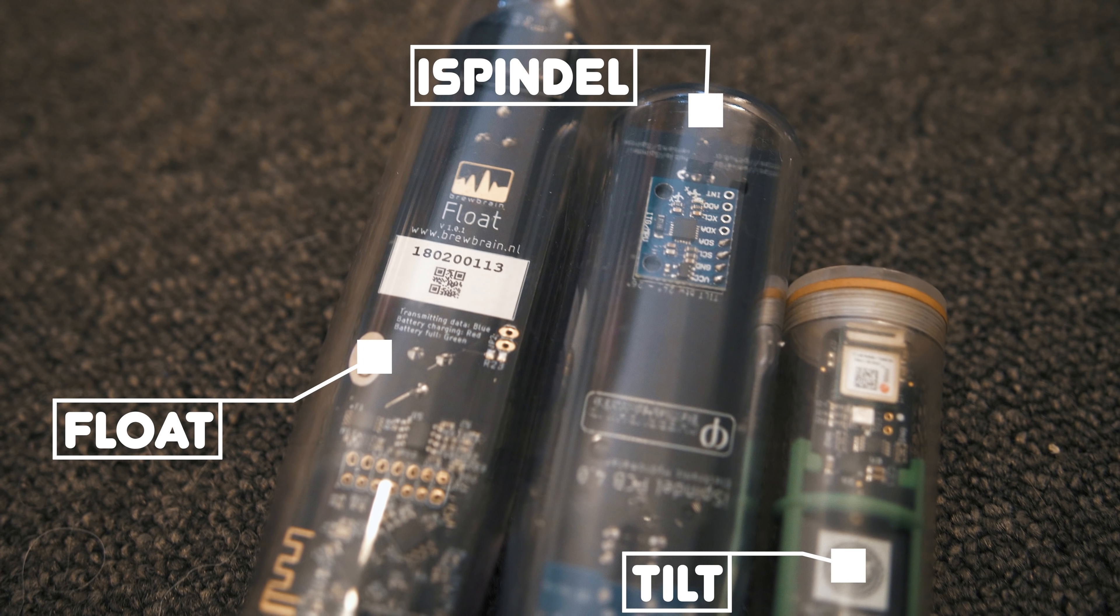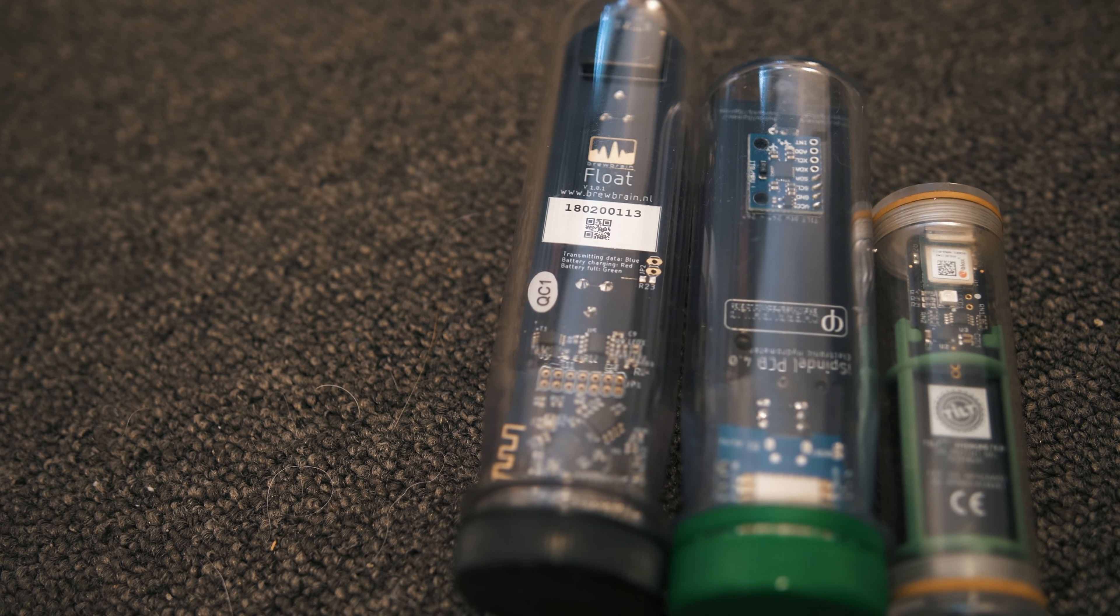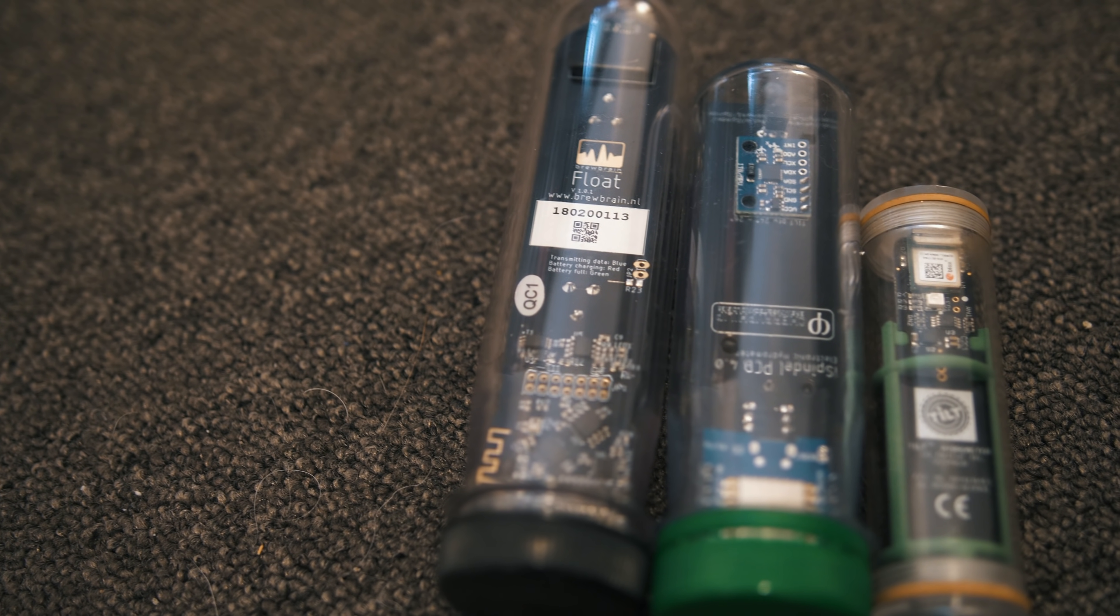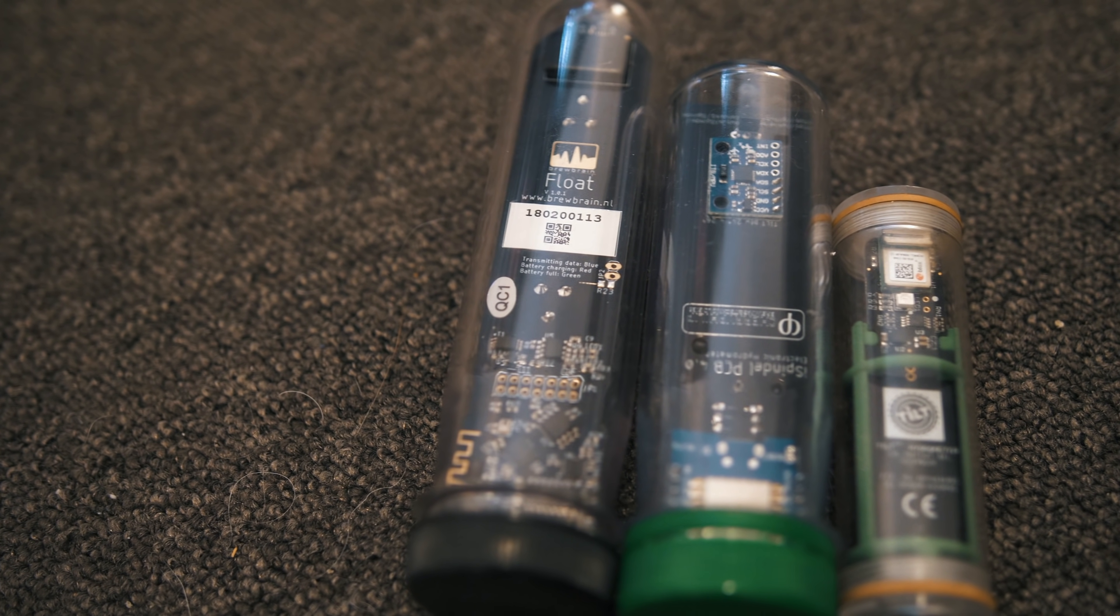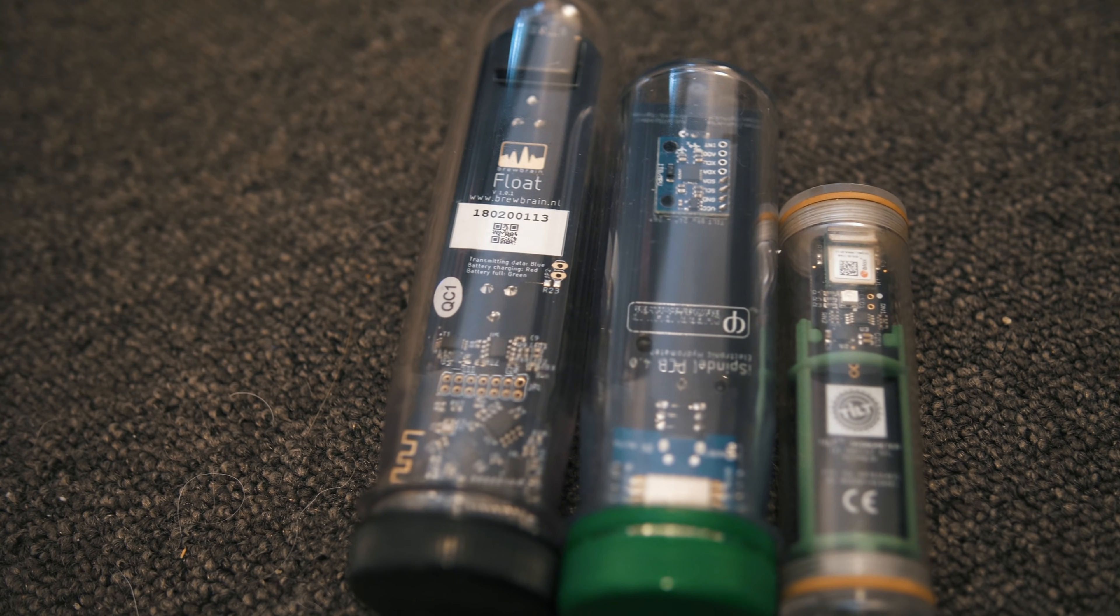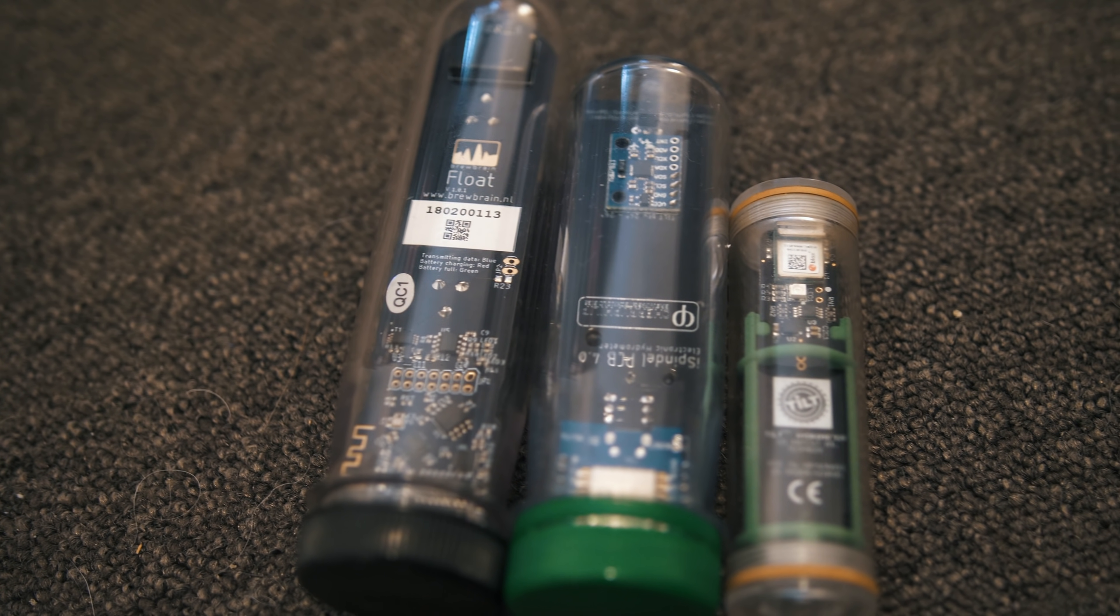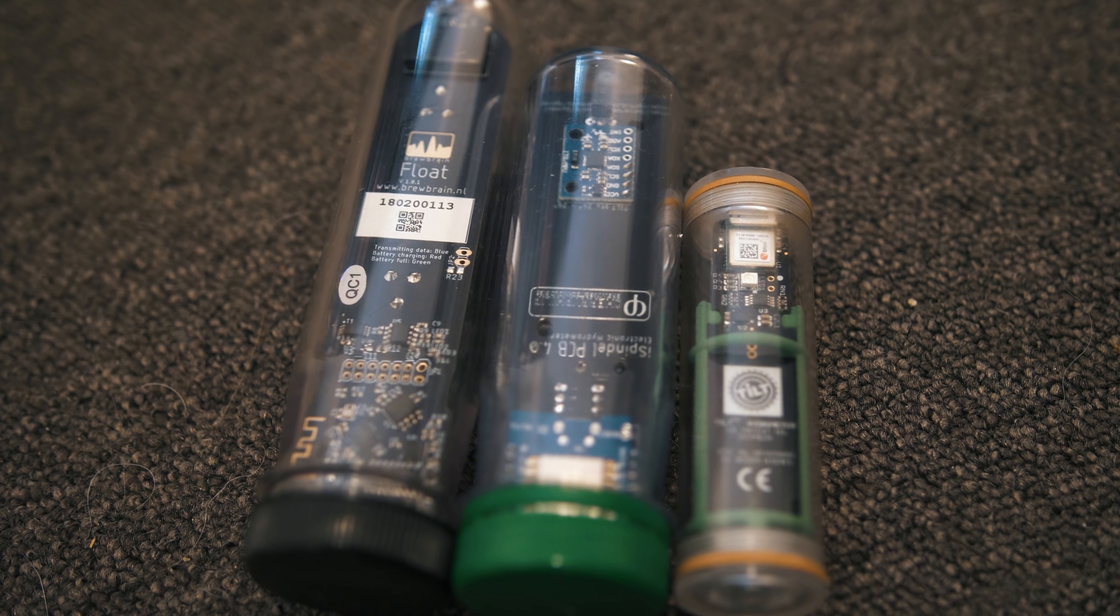It should be understood that these are not going to be super precise instruments, and some are a little bit more accurate in my experience than others. More on this later. During high fermentation you will not be getting much accuracy at all, because the yeast is very active and will move the floating hydrometer around. This effect will vary between different strains.